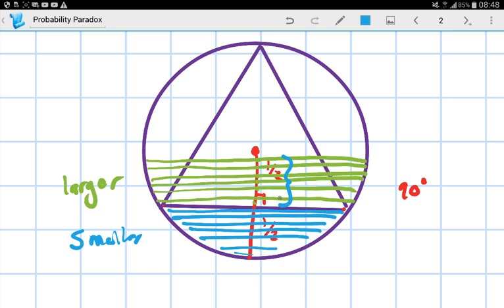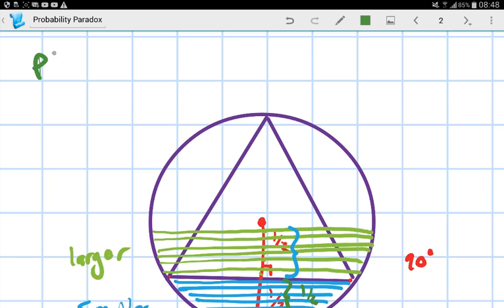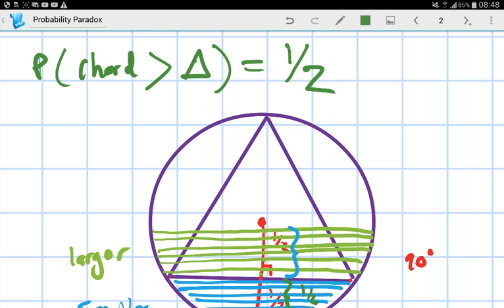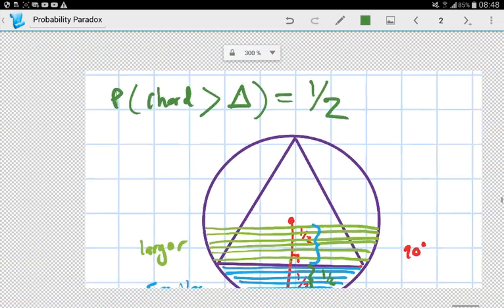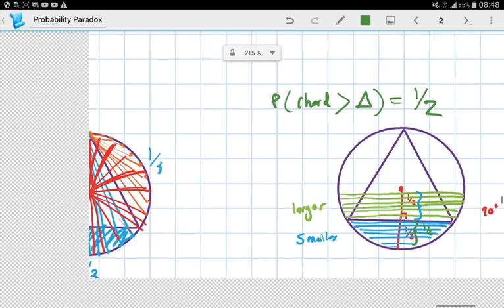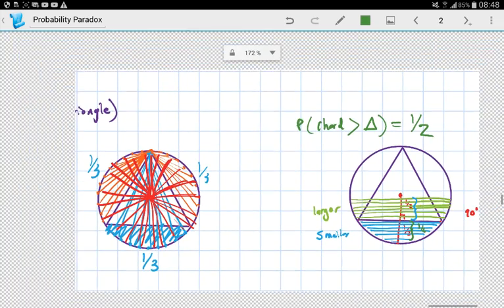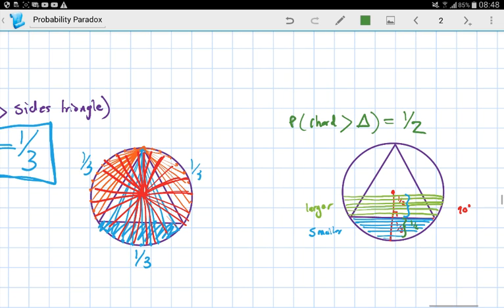But remember, this is a half and this is a half. Which means the probability of the chord being greater than one of the sides of the triangle is equal to a half. Now, this should start freaking you out a bit. How can the probability be both a half and a third when we've proven both of them mathematically?